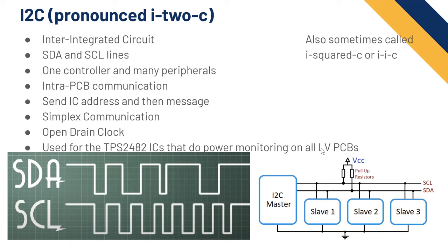I2C has an open-drain clock, which requires pull-up resistors. One example of I2C on the car is the TPS2482 integrated circuits that do power monitoring on all low-voltage boards — including the dashboard, APPS, LV PDB, data logger, and even the accumulator board.